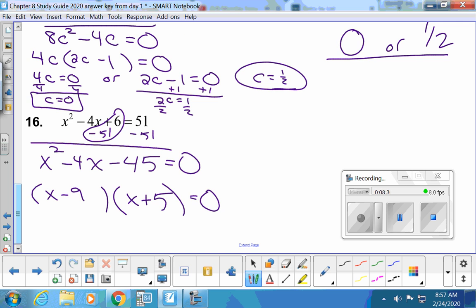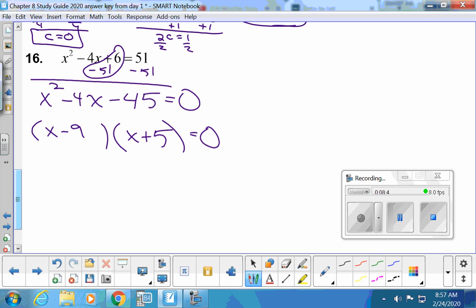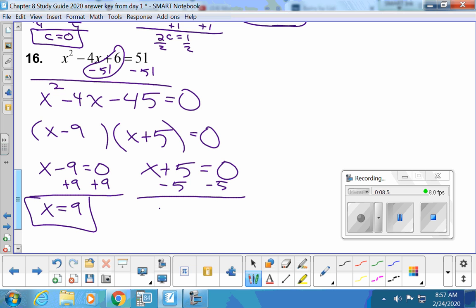Now, do you guys know what numbers multiply to the negative 45 but add up to the negative four? Negative nine and positive five. Very good. And then I set both of those equal to zero because I'm doing my zero product property. So, basically if this times this is zero, one of the two has to be zero. Either this one or this one. So, I'll finish this by adding nine. And I'll finish this by subtracting five. You can put your or in between.